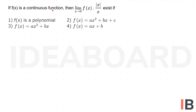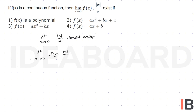If f of x is a continuous function, then limit x tends to 0 of f(x) into mod x by x exists. Clearly we know that limit x tends to 0 of mod x by x does not exist. So limit x tends to 0 of f(x) into mod x by x exists when...